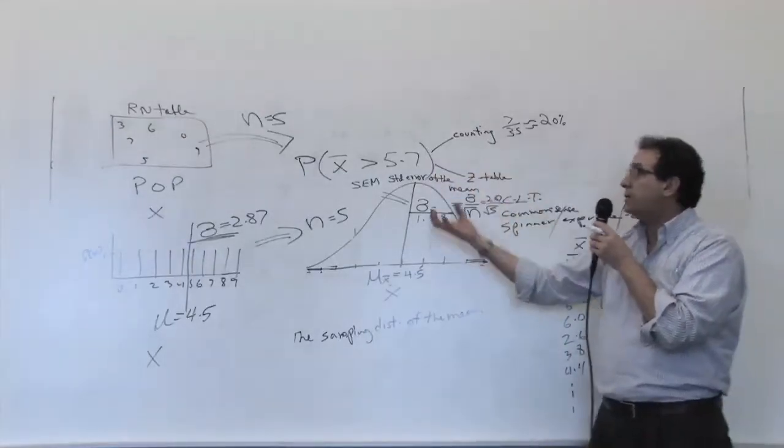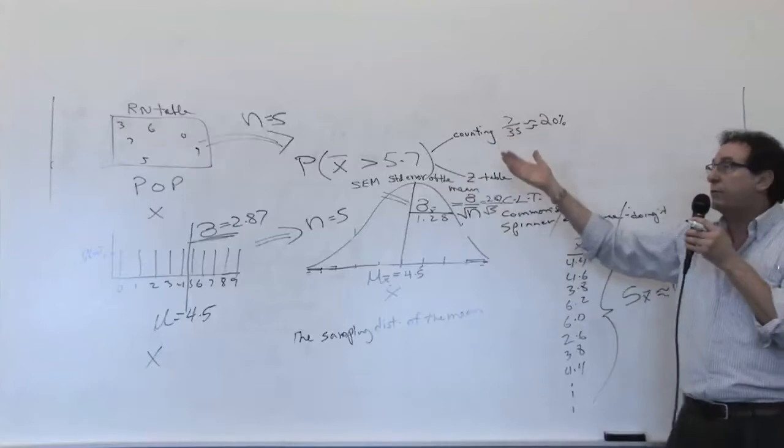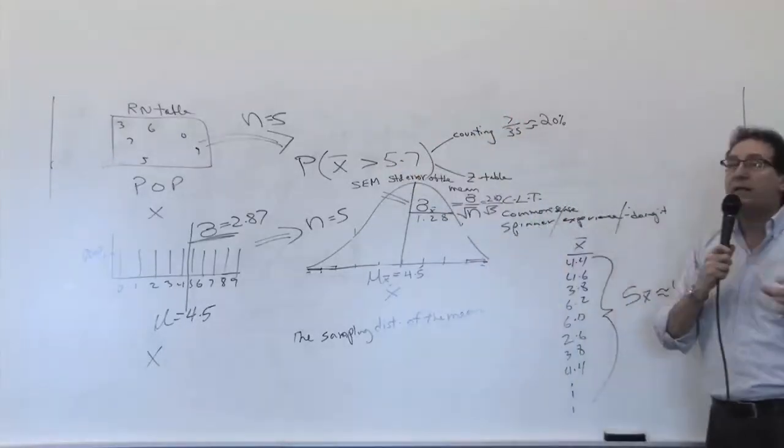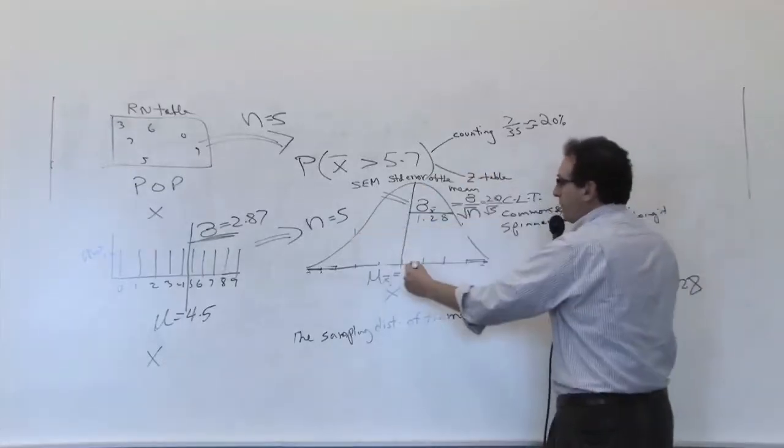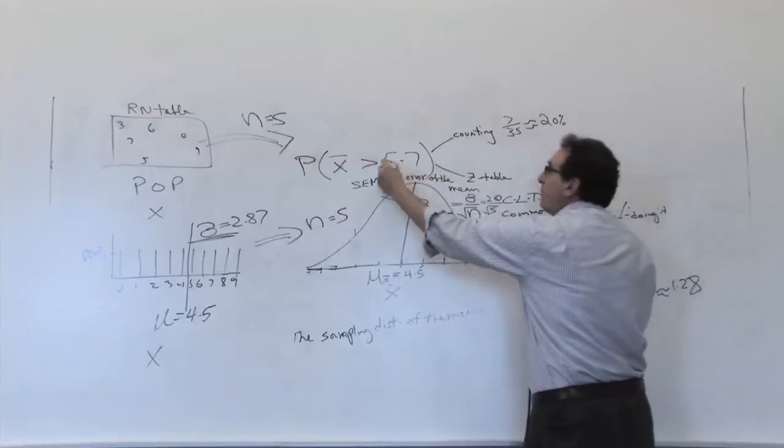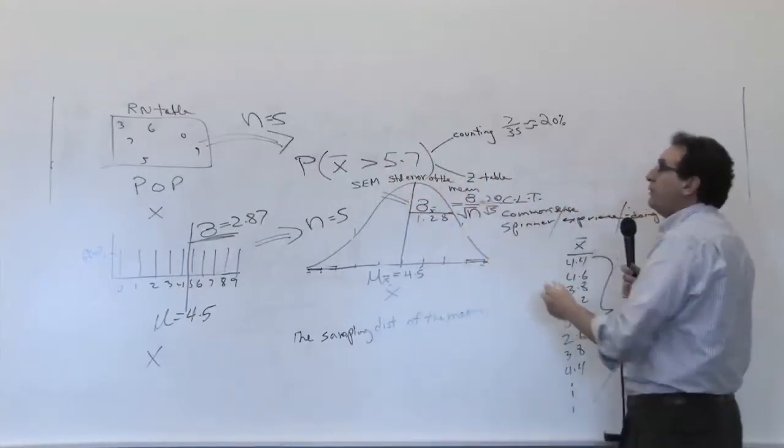So the question is, how many X bars? This doesn't seem like anything else in Chapter 6. It's just a random variable. How many X bars are bigger than 5.7? How do we solve it in Chapter 6? We have a bell-shaped curve with a middle value and a sigma, and we located the 5.7 with a boundary of the region on the picture. So where's 5.7?